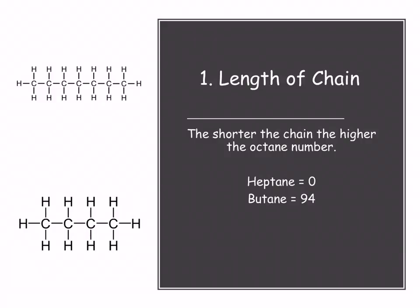So your length of chain, very simple, the shorter the chain the higher the octane number. We know our reference is heptane which is zero but butane C4H10 has an octane number of 94.